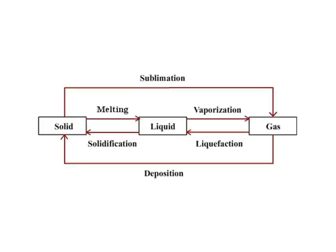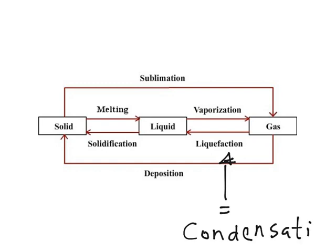A diagram holds all of the transitions so you can picture them more easily. You can see: a solid sublimates into a gas; a gas goes through deposition into a solid; a solid melts into liquid; a liquid vaporizes into gas; a gas liquefies into liquid — and liquefaction is the same as condensation. And when a liquid goes to a solid, it solidifies, which is the same as freezing.